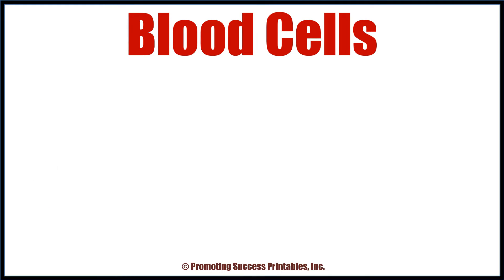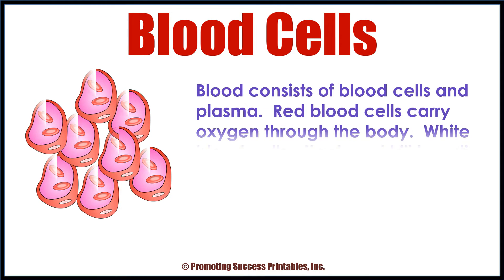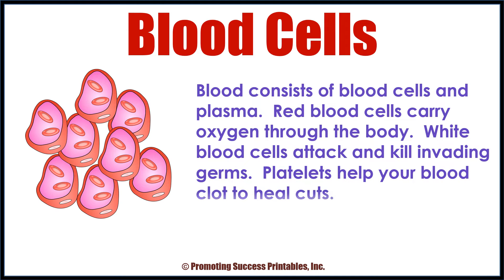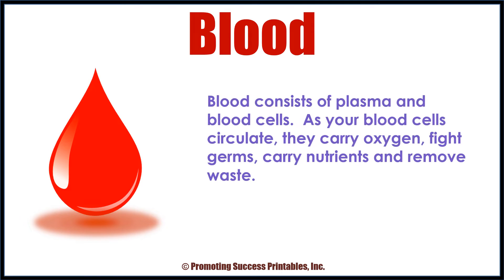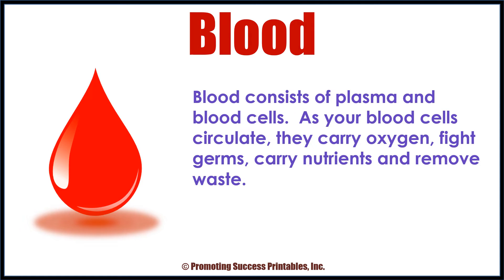Blood consists of blood cells and plasma. Red blood cells carry oxygen through the body. White blood cells attack and kill invading germs. Platelets help your blood clot to heal cuts. As your blood cells circulate, they carry oxygen, fight germs, carry nutrients, and remove waste.